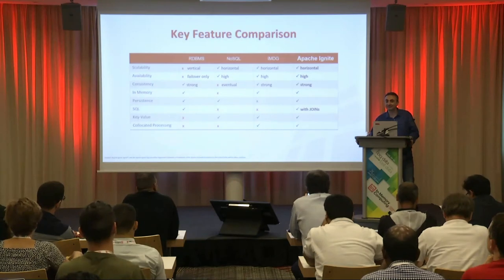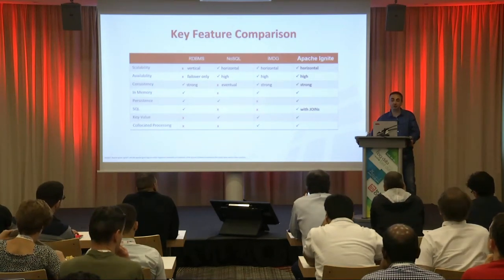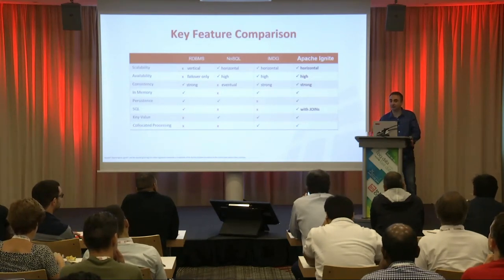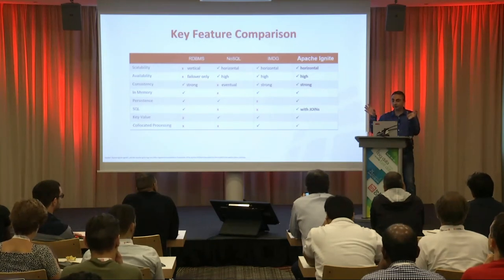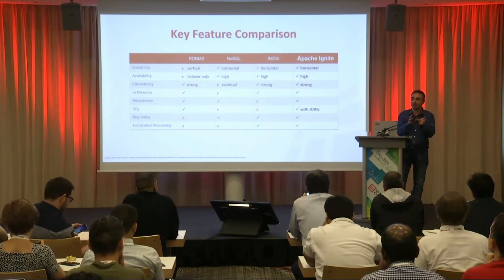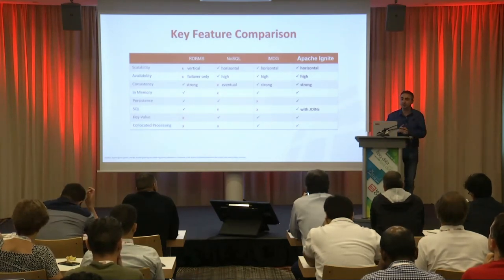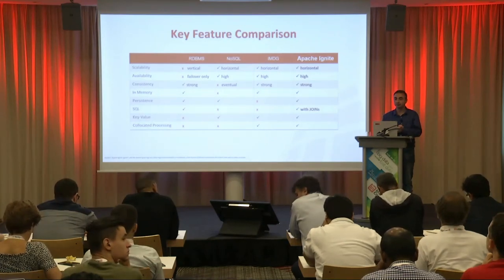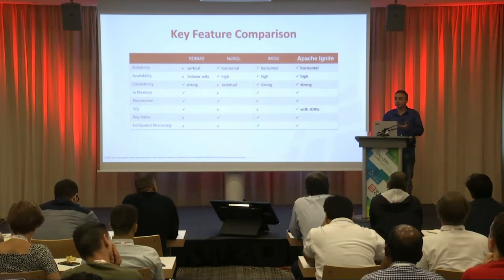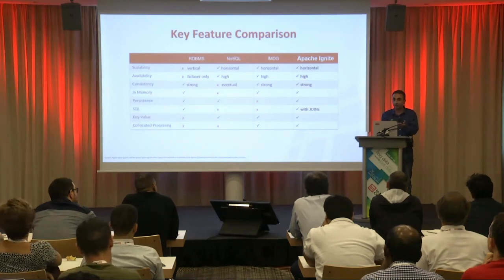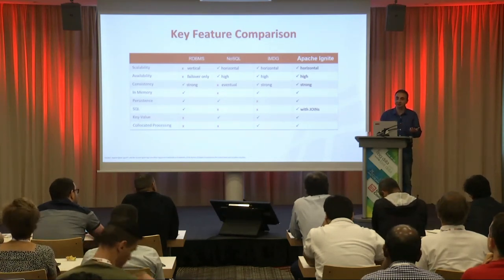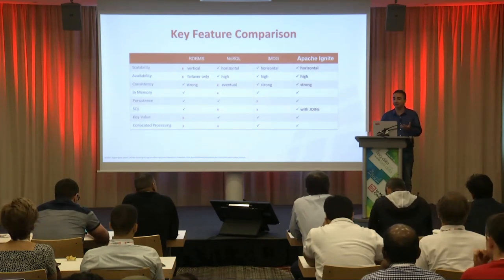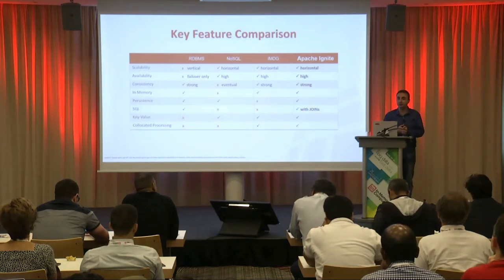If a value is larger than a single page, it spans multiple pages and we keep track of that with a link to the next page. Pages that a value spans do not have to be contiguous in memory — we just contain a link to the next page. We don't need to make the value continuous. The user asks for a key and gets a value back. We provide it in binary format by default, and you can access any piece of data without deserializing. We deserialize it only if you need it in deserialized form.